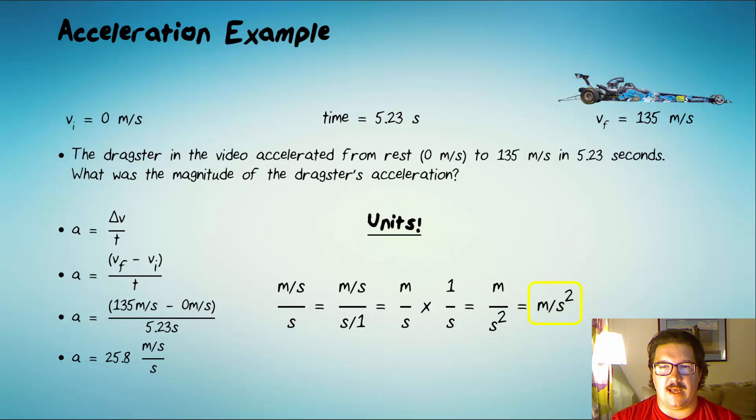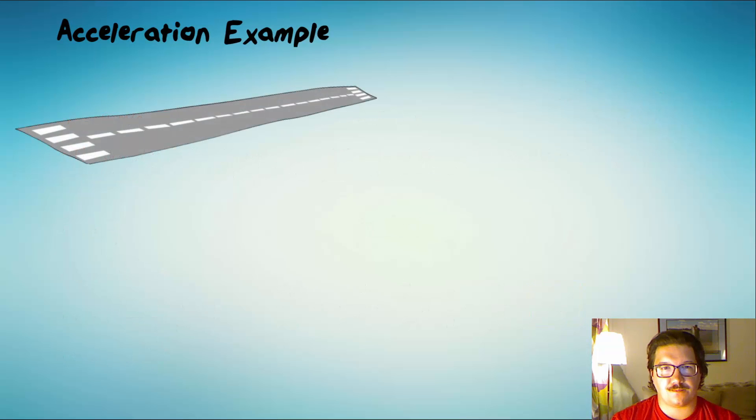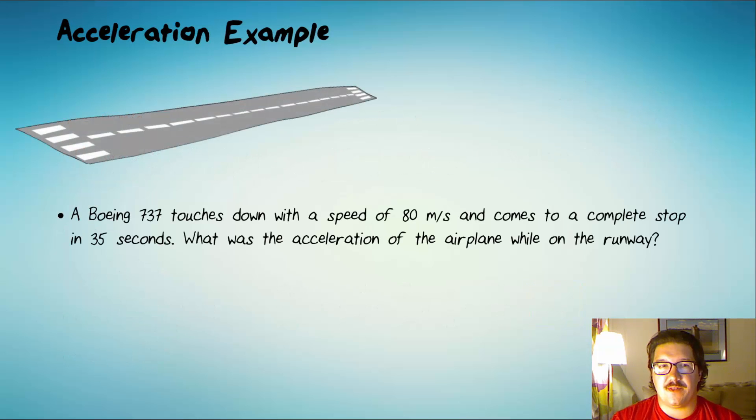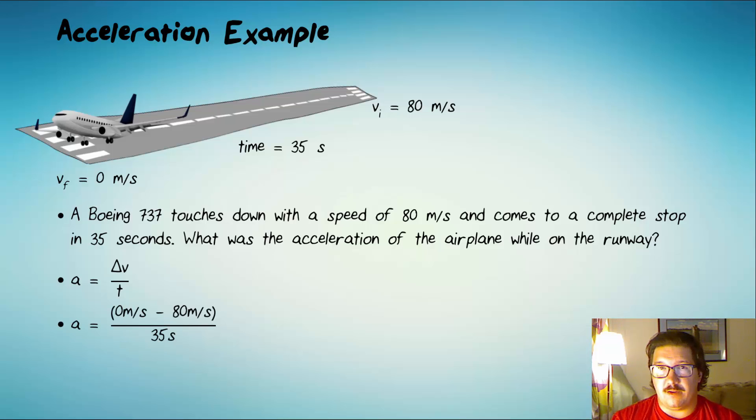Let's take a look at another example. A Boeing 737 touches down with the speed of 80 meters per second and comes to a complete stop in 35 seconds. What was the acceleration of the airplane while on the runway? We'll start with the same equation. And we'll do delta V like we said. It's the final value minus the initial. And since the airplane was stopping, its final velocity is zero minus its initial velocity of 80.